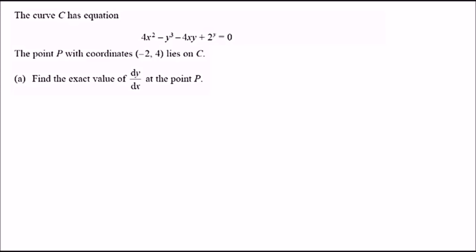New problem: curve C has equation 4x squared minus y cubed minus 4xy plus 2 to the power y equals 0. Point P has coordinates (negative 2, 4) and lies on C. Part A: find the exact value of dy over dx at point P using implicit differentiation.